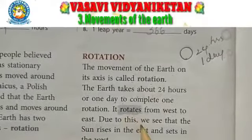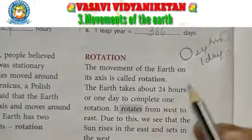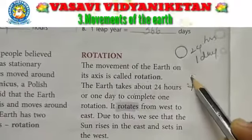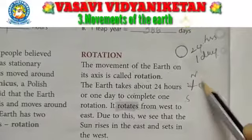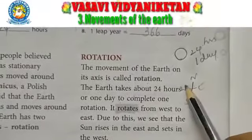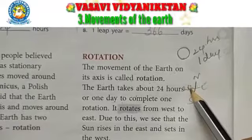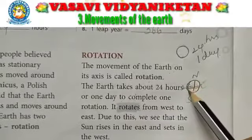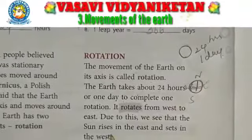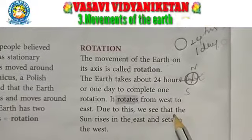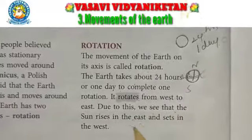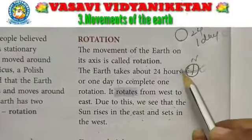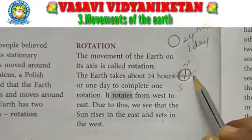The earth rotates from west to east. The cardinal directions are north, south, east, and west. The earth rotates from west to east. Due to this, we see that the sun rises in the east and sets in the west.